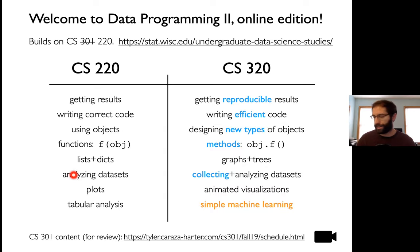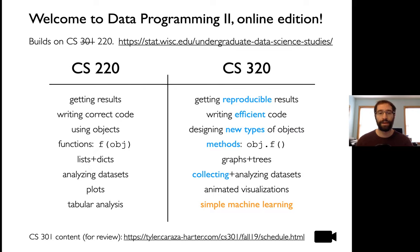We've always given you data sets for 220, and I'm often going to do that for this course as well. But now we're also going to have cases where we collect our own data sets, either by taking performance measurements or choosing your own data set online. The visualizations are going to be more sophisticated — instead of simple plots, we're going to sometimes have animations and geographic maps. And then in the last third of this course, we're going to introduce simple machine learning, building on the tabular analysis we did in 220.